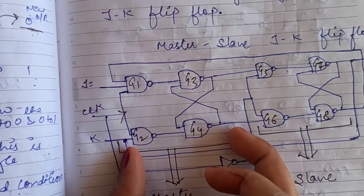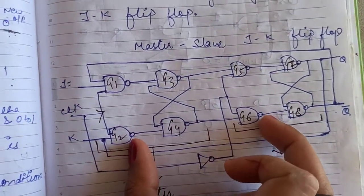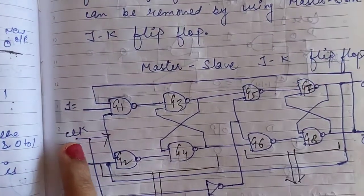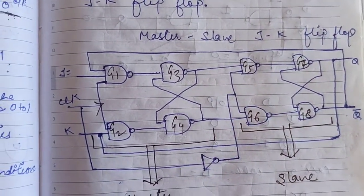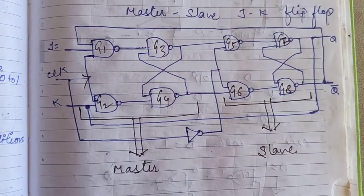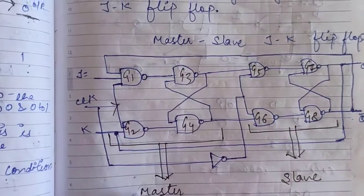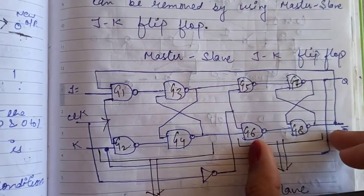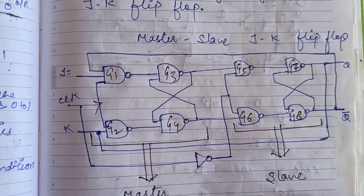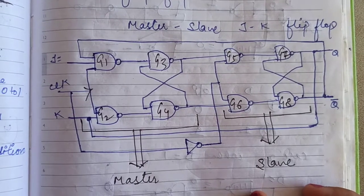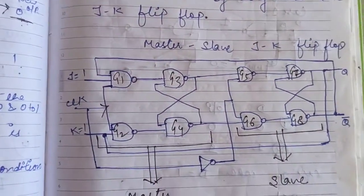This one is the first circuit and this one is the second circuit. What is the basic difference between these two circuits? Here we directly give the clock, and here the clock is passed through an inverter — a NOT gate. So we call these two circuits the master and slave circuits. The circuit with the direct clock pulse is called the master circuit, and the circuit with the inverted clock pulse is called the slave circuit. Now, how will this remove the toggle condition? When we give J=1, K=1 as input and the clock is also 1...